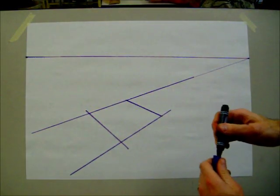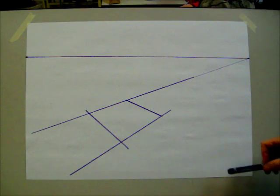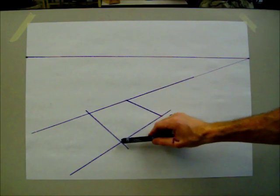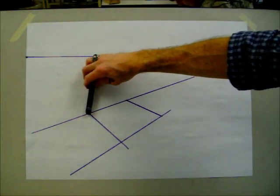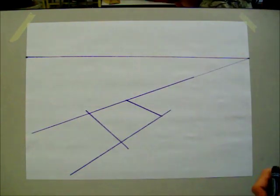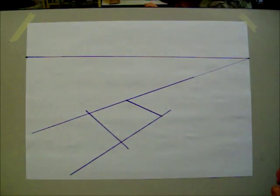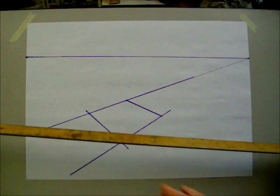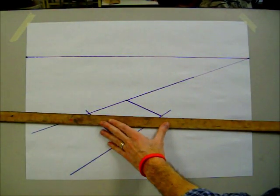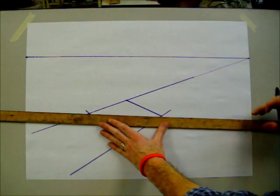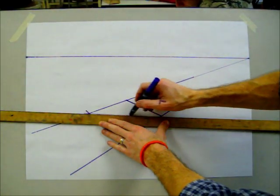Now what we want to do is find perspective center. So from this point to this point, and this point to this point, create an X very lightly because these are working lines.